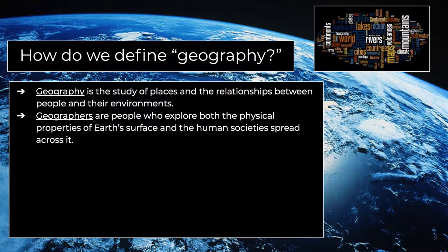Geographers quite simply are people who study geography. The more complex definition is that geographers are people who explore both the physical properties of the earth's surface and the human society spread across it. Really, geographers study places and people, and how places and people affect each other.